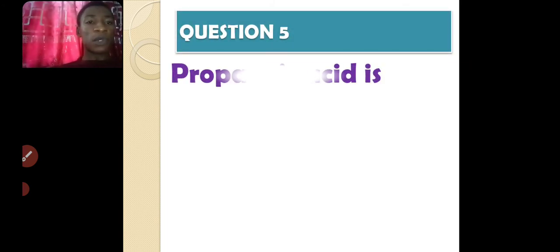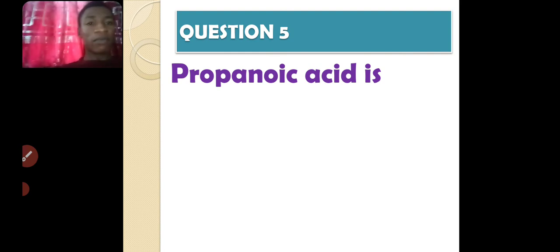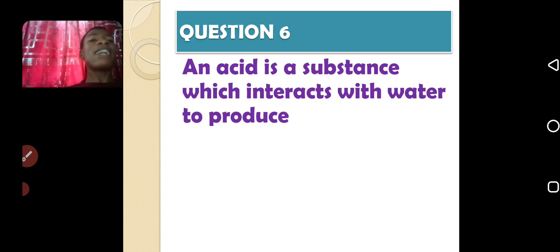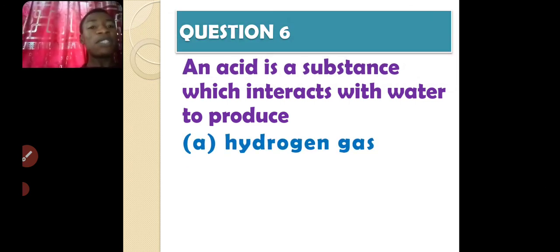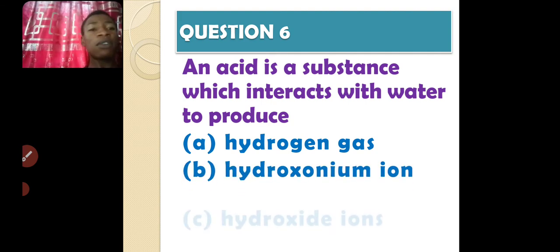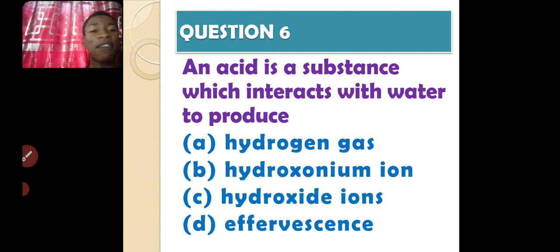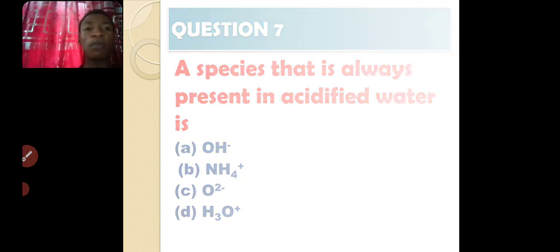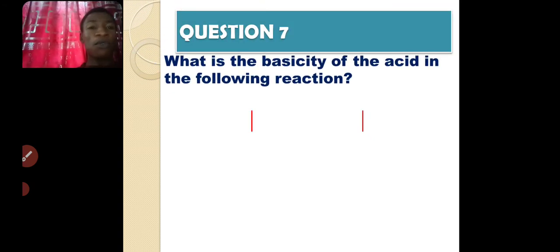Question five: propanoic acid is what? Is it tribasic, dibasic, monobasic, or unionisable? Question six: an acid is a substance that reacts with water to produce what? Is it hydrogen gas, hydrogen ion, hydroxide ion, or effervescence — effervescence meaning bubbles of gas coming out? Question seven: a species that you will always find in acidified water is what? Is it OH⁻, NH₄⁺, O²⁻, or H₃O⁺?